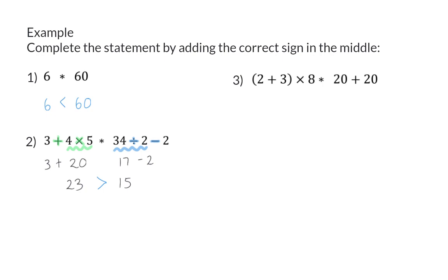In number three, we once again need to make sure that we do the correct order of calculations. So first, we need to simplify the bracket, which will give us 5, that now needs to be multiplied by 8, to give a value of 40. On the right, we only have addition, so 20 plus 20 will give a value of 40. And in this statement, the left-hand side is equal to the right-hand side.